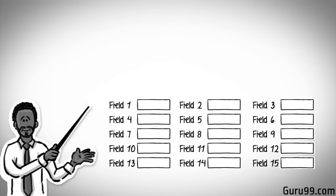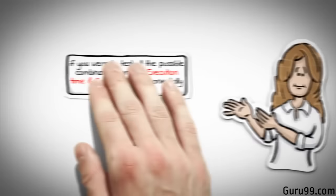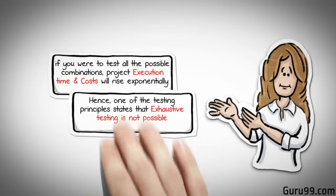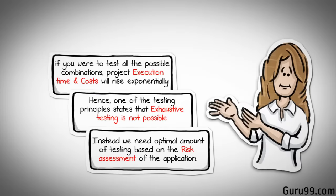Suppose you have 15 input fields to test, each having 5 possible values. The number of combinations to be tested would be 5 raised to 15. If you were to test all the possible combinations, project execution time and costs will rise exponentially. Hence, one of the testing principles states that exhaustive testing is not possible. Instead, we need the optimal amount of testing based on the risk assessment of the application.